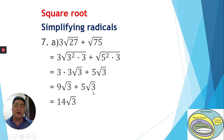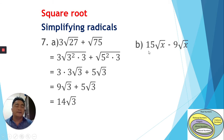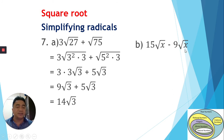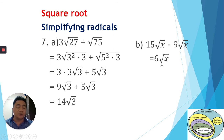Next, we have 15√x minus 9√x. You will see that the radicands are already the same — both are x. So we can simplify the coefficients right away: 15 minus 9 equals 6. The answer is 6√x. Simple — our main purpose is to make the radicand the same so we can combine the terms.